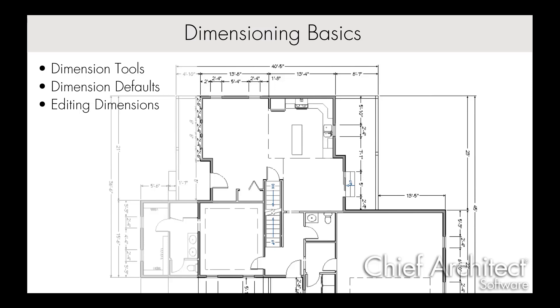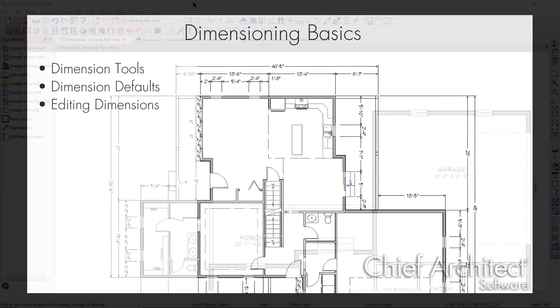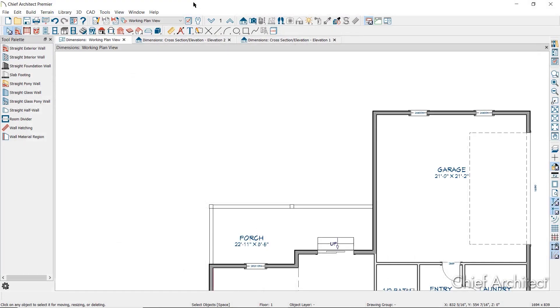There are a variety of tools you can use to dimension your plan. These tools can be categorized into three types: temporary dimensions, manual dimensions, and automatic dimensions.